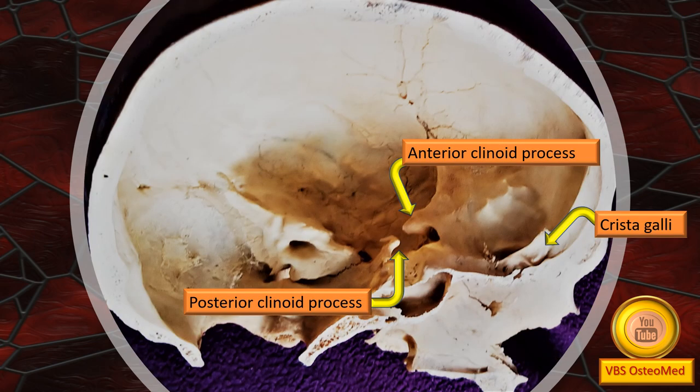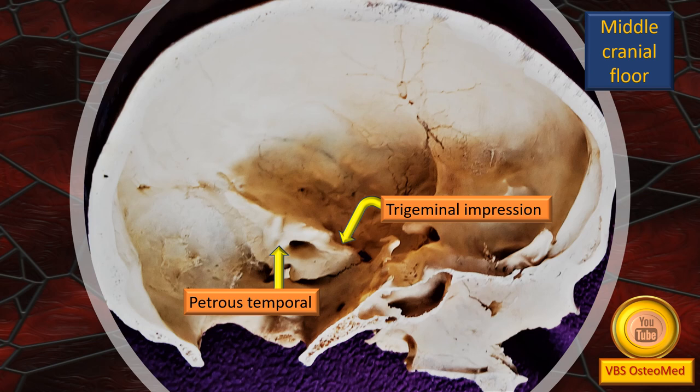Another slide shows very prominent anterior and posterior clinoid processes in this sagittal section. Since it is a sagittal section, the crista galli in the anterior cranial fossa is also incidentally well seen. The trigeminal impression is visible as a pit or shadow in the floor of the middle cranial fossa. The whole bone immediately behind it is the petrous part of the temporal bone.